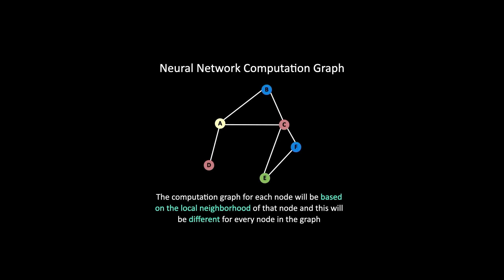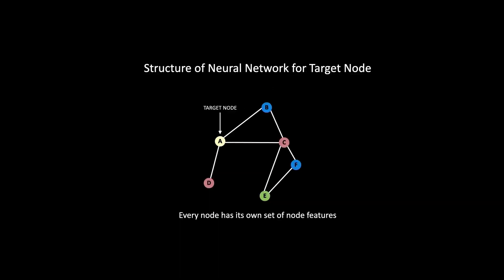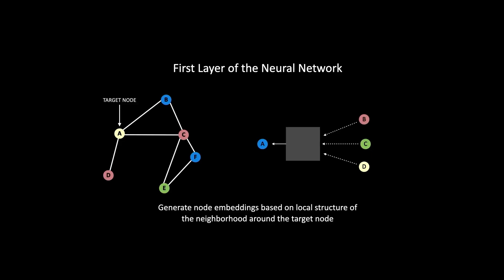Let's talk about how node embeddings are generated for each node in the graph. Every node in the original graph structure will have its own set of node features, which are typically features of the entity that the node represents. When these node features are passed through a graph neural network, the network will generate node embeddings based on the local structure of the neighborhood around the target node. So the node's features as well as its neighboring nodes are used to generate the embeddings for that node.